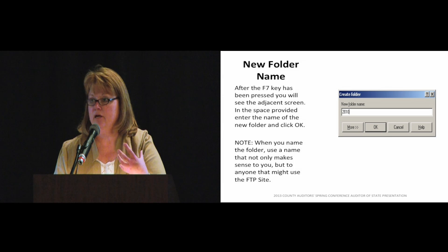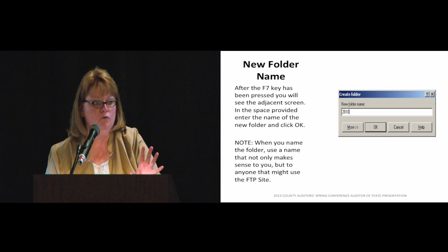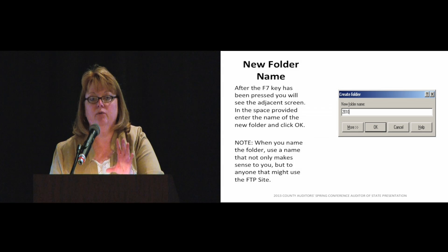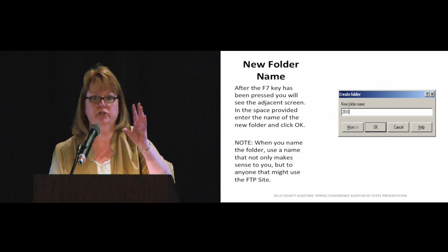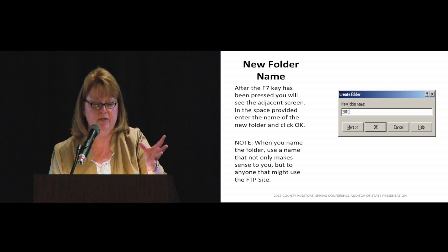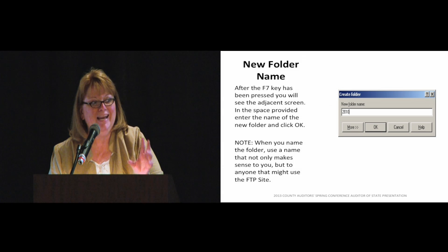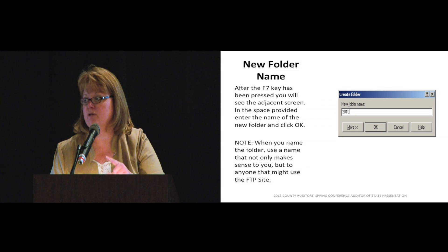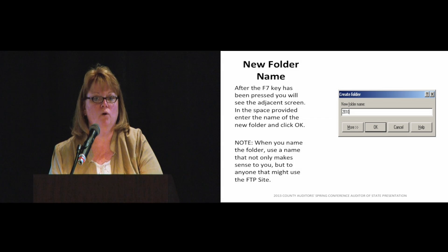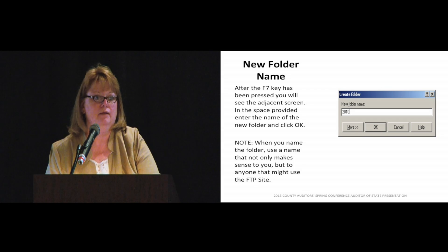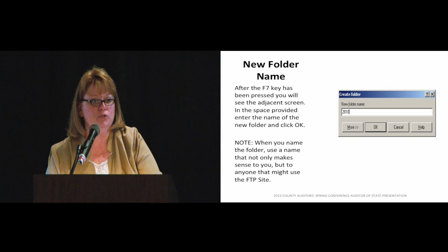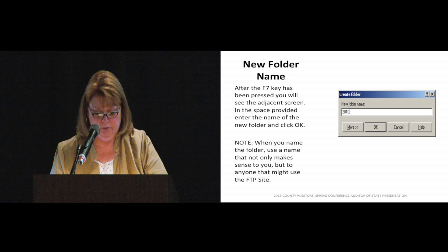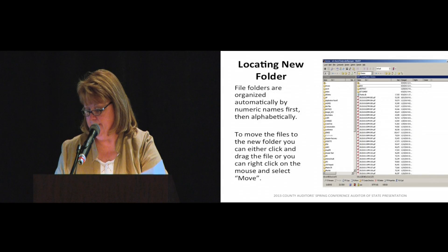Wouldn't it be nicer to be able to click on a folder to go to what you need? To create a folder on this initial screen, you're going to press your F7 key. As soon as you press that F7 key, you're going to get this pop-up box, and you're going to type in the name of your folder. It's very important that when you name folders — and this is applicable to your network files and C drive as well — you want to name it something meaningful, not only to you but to anybody else who's going to be looking at these files. If you name it Folder 1, a new person doing excise won't know what that is. So it's got to be a meaningful name. After you put the name in, click OK.